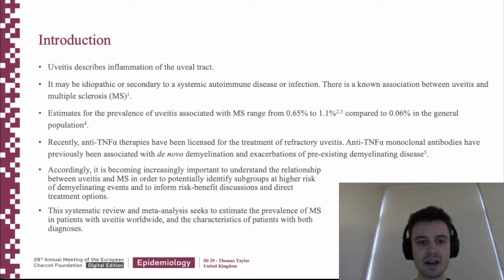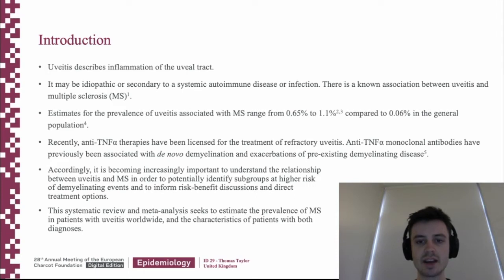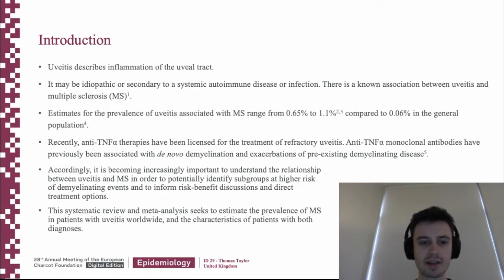Recently, anti-TNF-alpha therapies have been licensed for treatment of refractory uveitis. However, these have also been associated with de novo demyelination and exacerbations of pre-existing demyelinating disease. It is therefore increasingly important to understand the relationship between uveitis and MS in order to potentially identify subgroups of patients with a higher risk of demyelinating events.